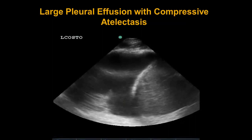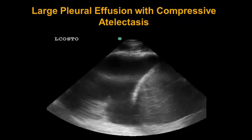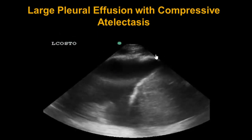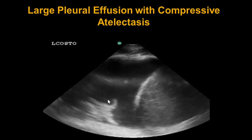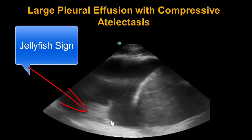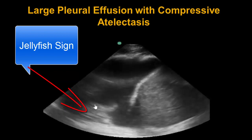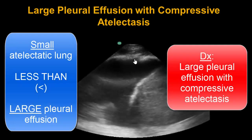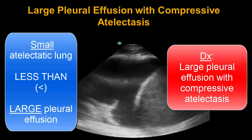So far, we have seen a couple of nice examples of secondary pleural effusions due to a primary lung pathology such as pneumonia. Now let's take a look at secondary lung consolidation — otherwise known as compressive atelectasis — in the setting of a large pleural effusion. In this image, we are seeing a left costophrenic view. As I activate the video, again we see chest wall, diaphragm, spleen, a large anechoic space with atelectatic lung, and the jellyfish sign, which looks like a wagging tail and represents the distal segment of atelectatic lung. In this case, we see quite a large pleural effusion compared to a small compressed atelectatic lung. Therefore, the diagnosis is a large pleural effusion with secondary compressive atelectasis.